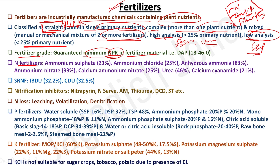Nitrogenous fertilizers mainly supply nitrogen. Nitrate fertilizers are prone to leaching and denitrification losses. Ammoniacal fertilizers are more prone to fixation and volatilization losses. Amide fertilizers must first convert to nitrate or ammoniacal form before plant uptake.